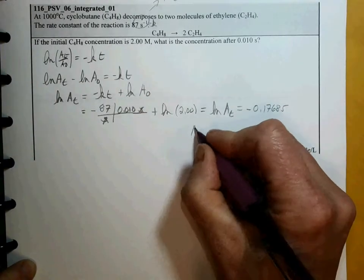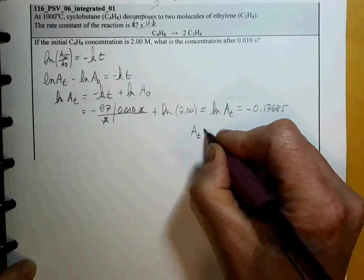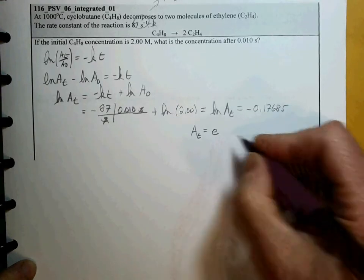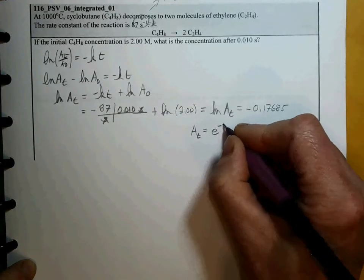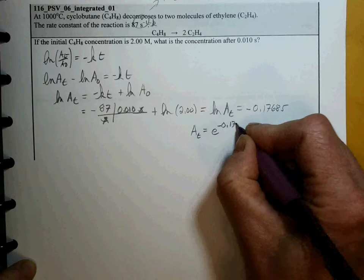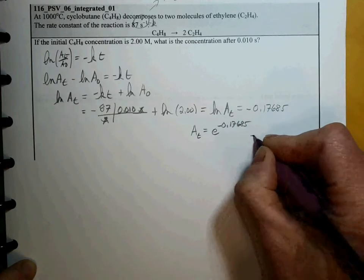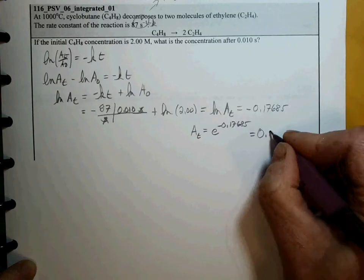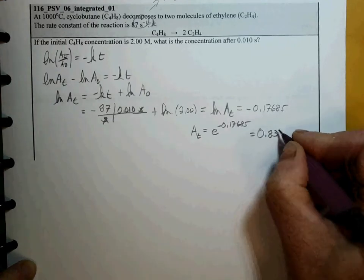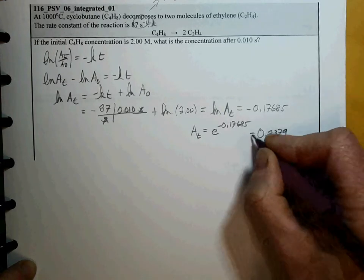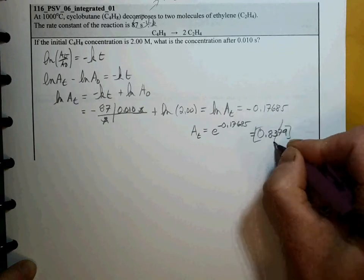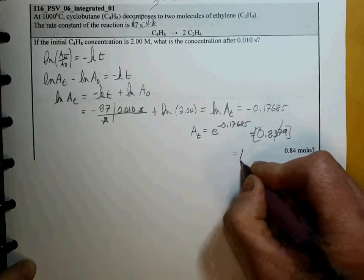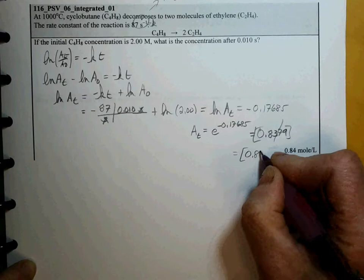We can get the concentration at time T by raising e to the minus 0.17685. This is equal to 0.8379. With 2 sig figs, this is equal to 0.84 molar.